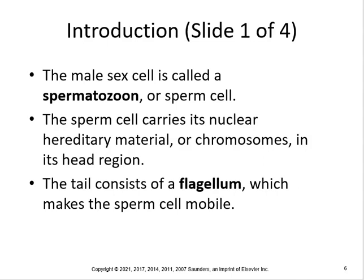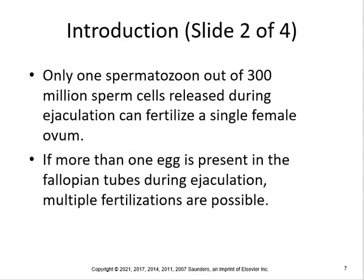This is not an anatomy class, so you don't have to know all the parts of the cell, but at least know what a sperm cell is and what a flagellum is. Only one spermatozoan out of 300 million sperm cells released during ejaculation can fertilize a single female ovum. If more than one egg is present in the fallopian tubes, multiple fertilizations are possible.